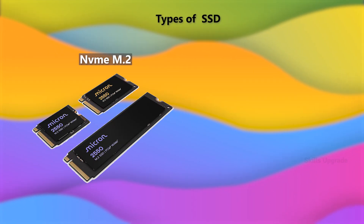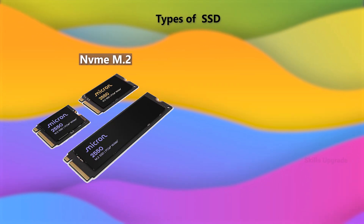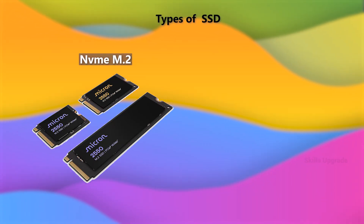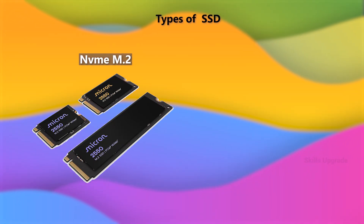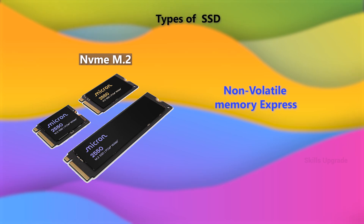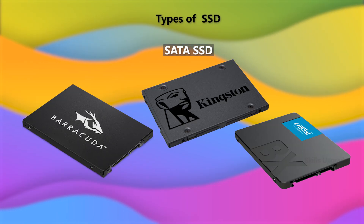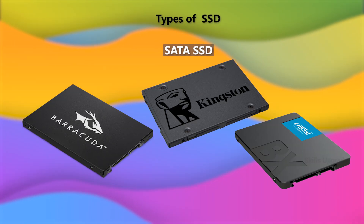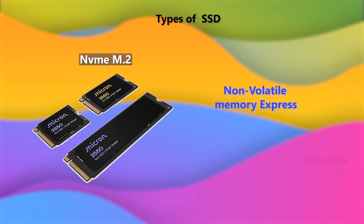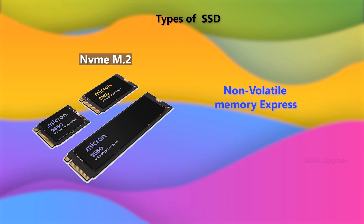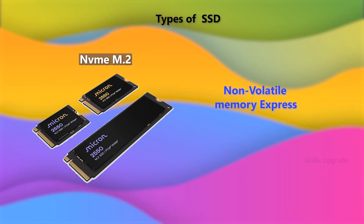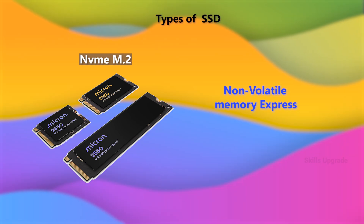The next type is NVMe M.2. NVMe is non-volatile memory express. If you compare SATA SSD to NVMe, this non-volatile memory express is very fast.